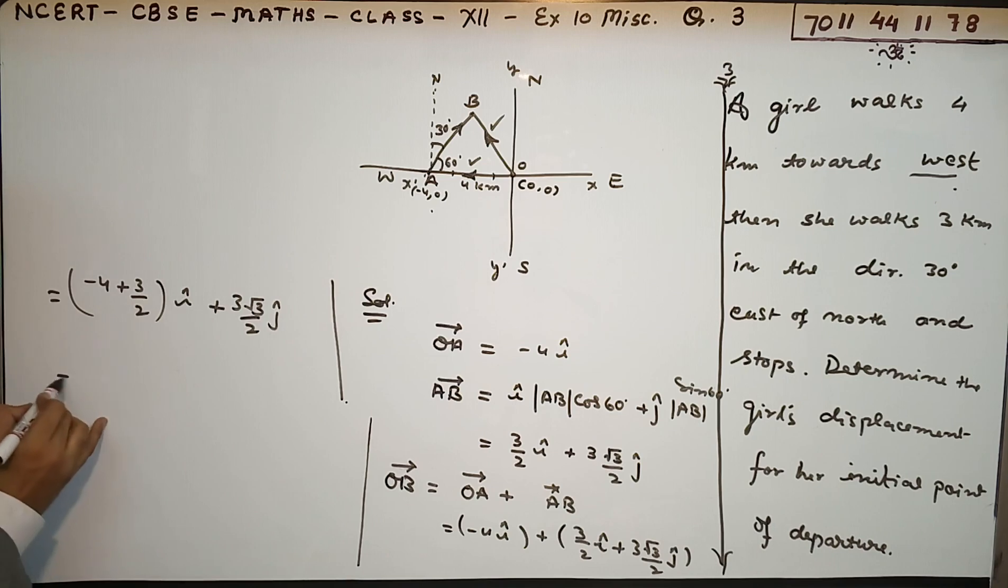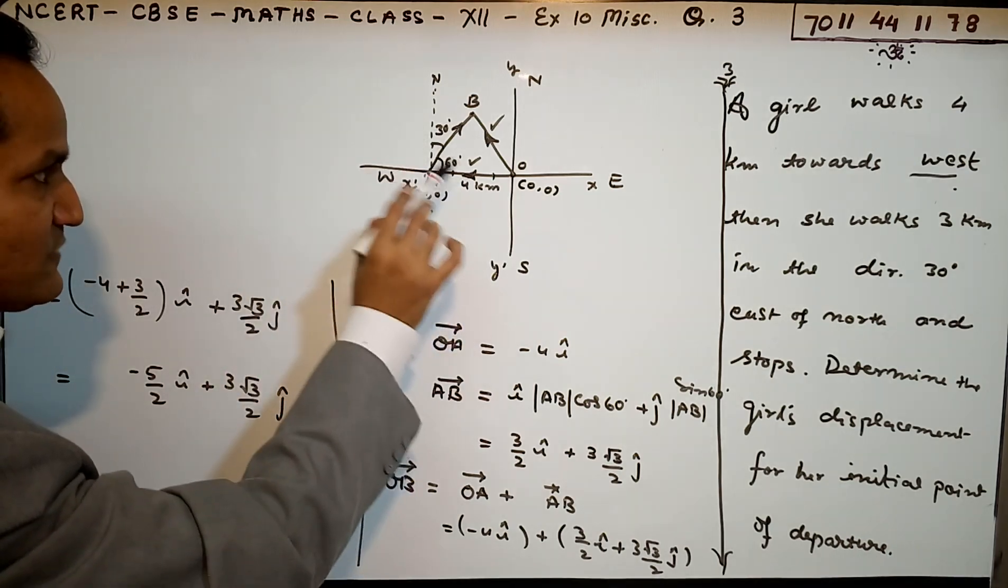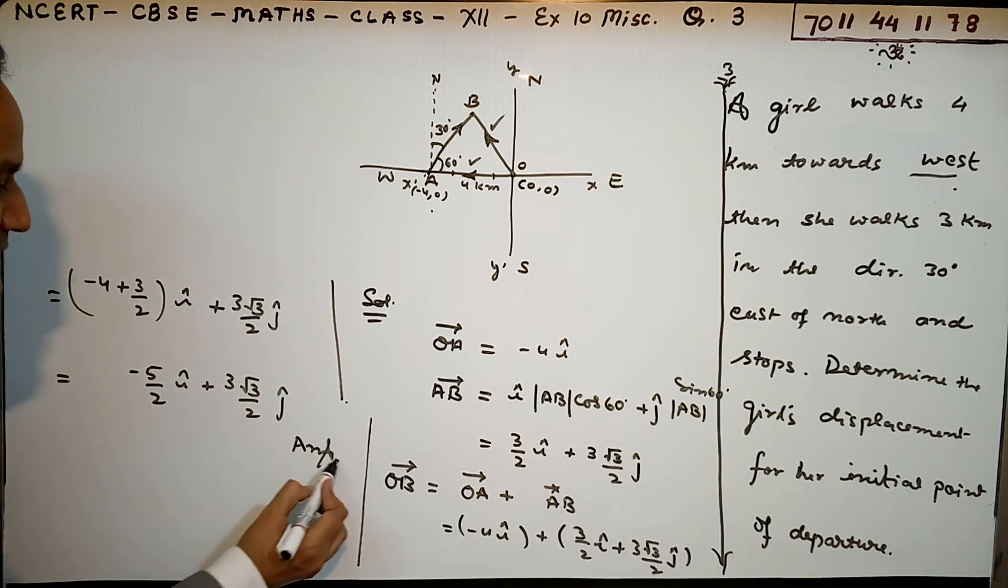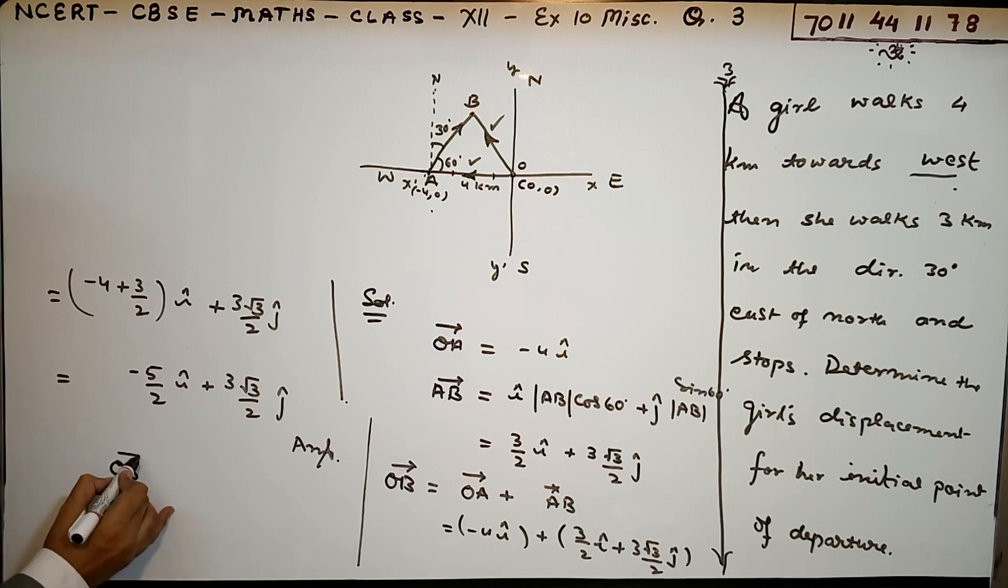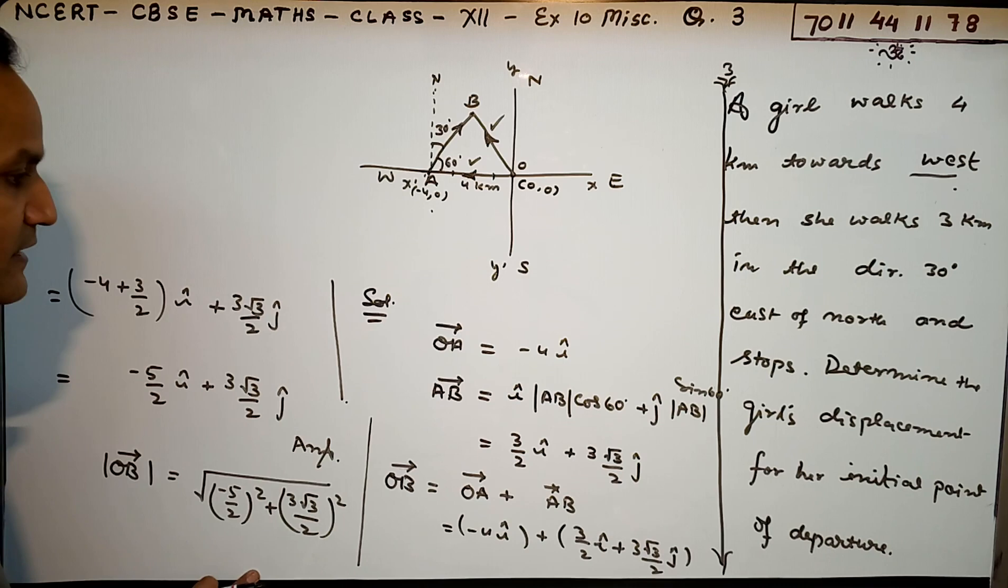This is the required displacement. If you want to calculate the magnitude, you can take (-4 + 3/2)² plus (3 root 3/2)² and find the square root. The displacement will be in units. If you have the answer, you can complete your question.